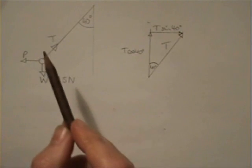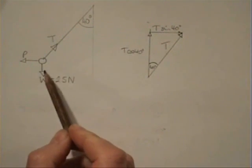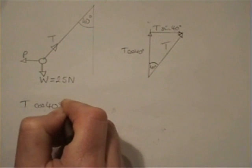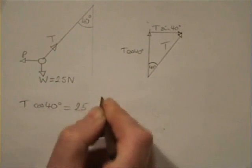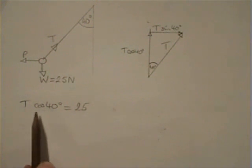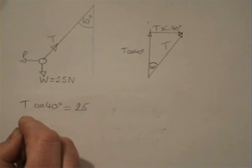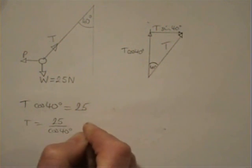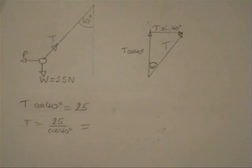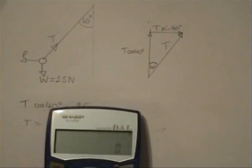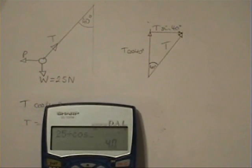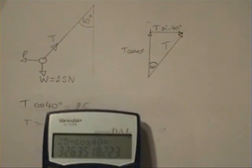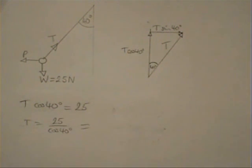The object's in equilibrium, so the vertical component of the tension acting upwards must be equal to the weight. So we can write T cos 40 degrees is equal to the weight which is 25 newtons. So if we want to get the T on its own, we need to divide by cos 40. So T equals 25 divided by the cosine of 40 degrees, which is 32.6 newtons. And since the question only gave the forces to us in two figures, I'm going to write that down as 33 newtons.